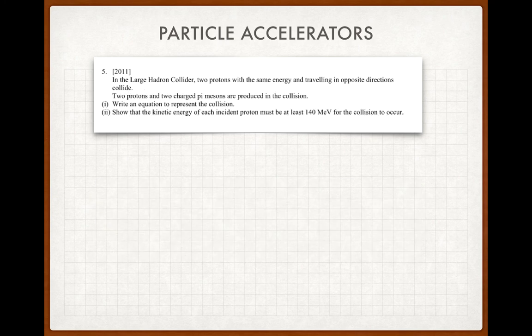Second example, 2011. So in this case, two protons are collided off each other, two protons and two charged pi mesons are produced in the collision. So write an equation to represent this, and show the kinetic energy of each incident proton must be at least that for a collision to occur. Alright, so the equation will be p plus p plus energy goes to p plus p plus pi plus pi afterwards. Now the pi mesons will either both have to be neutrally charged, or one will have to be positive, and one will have to be negative to conserve charge.